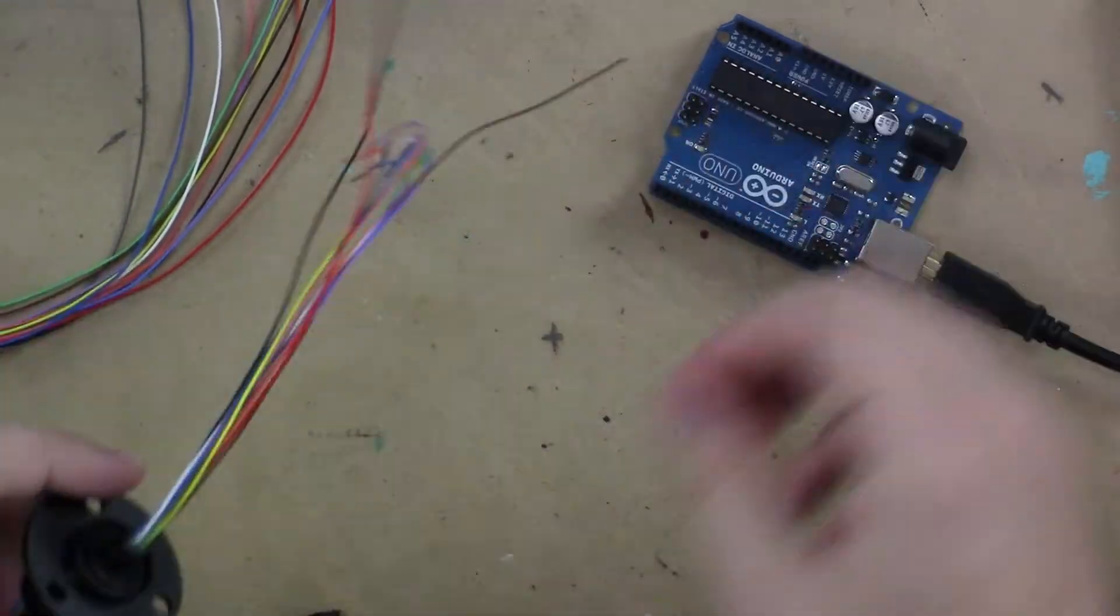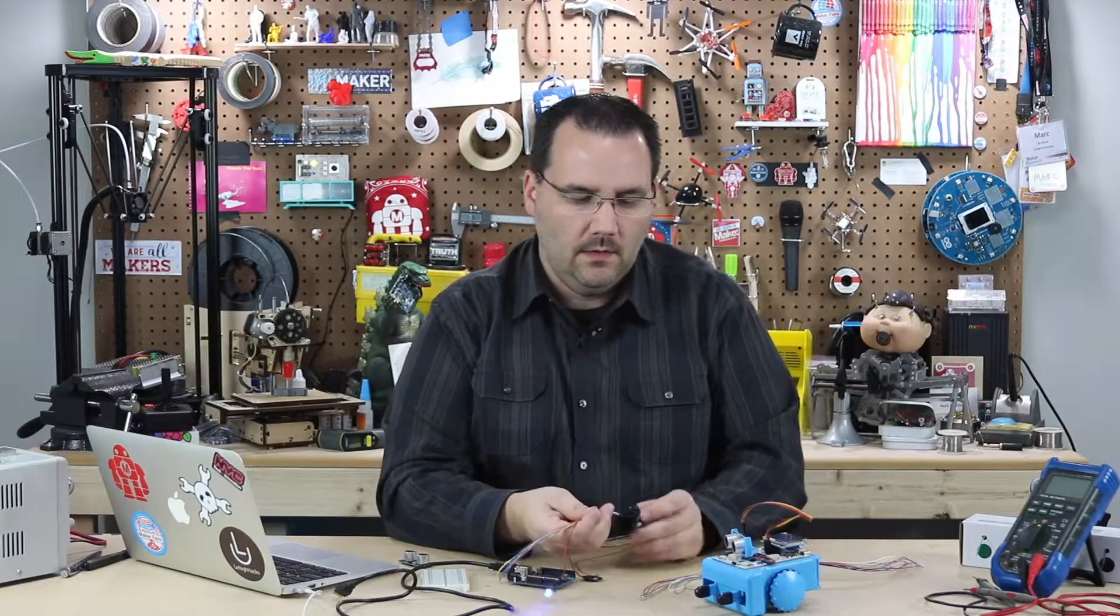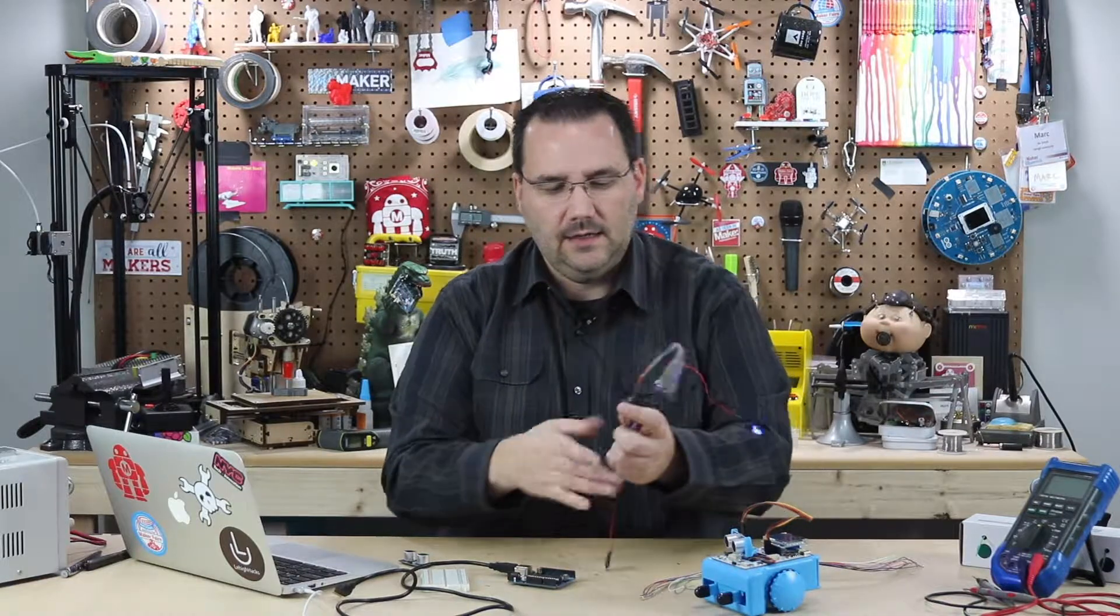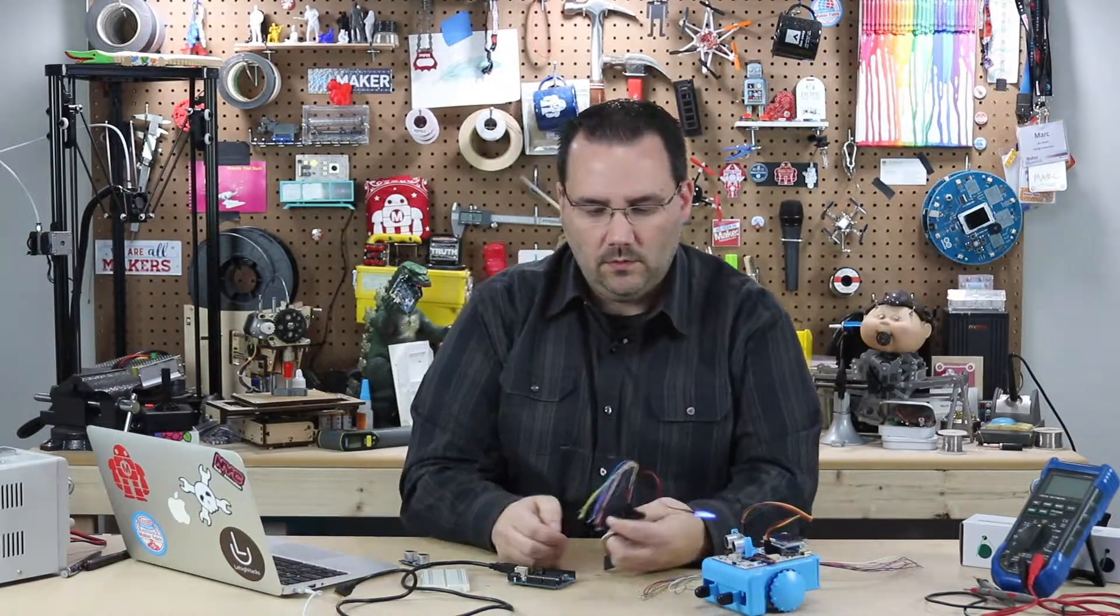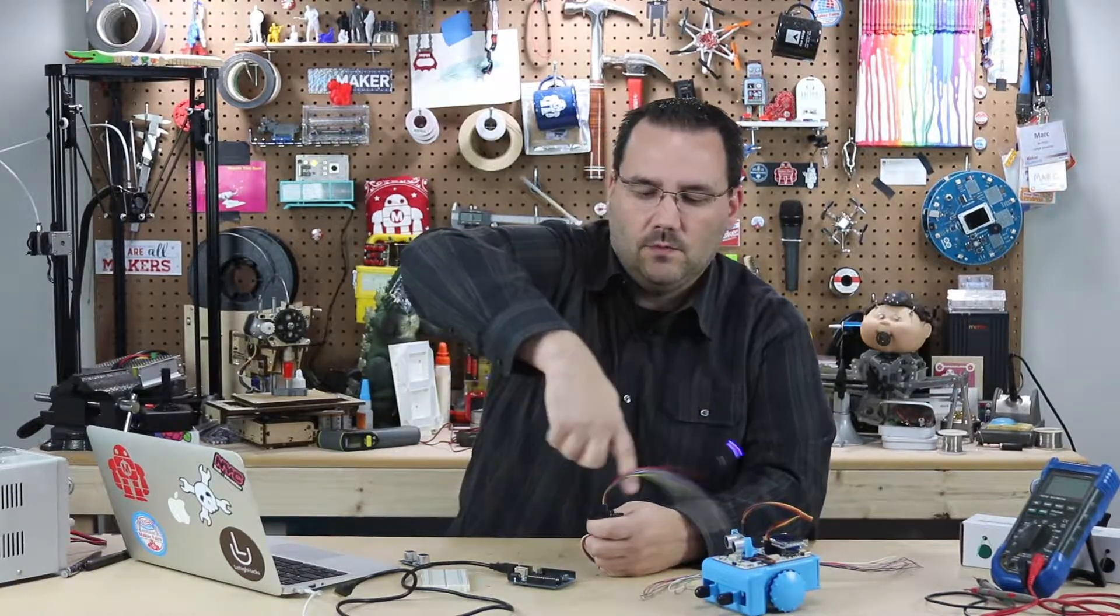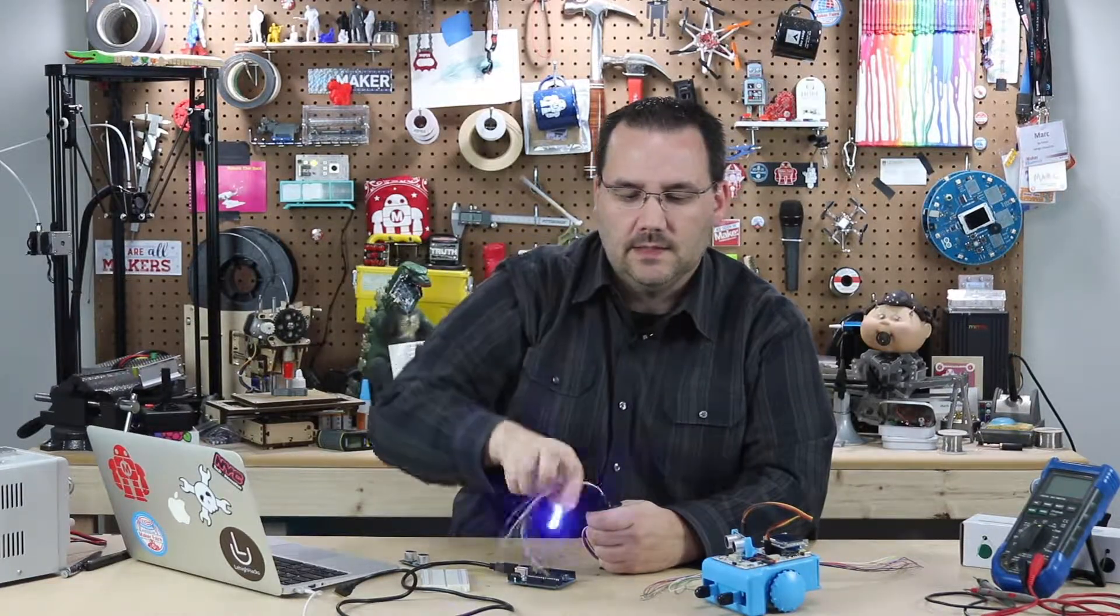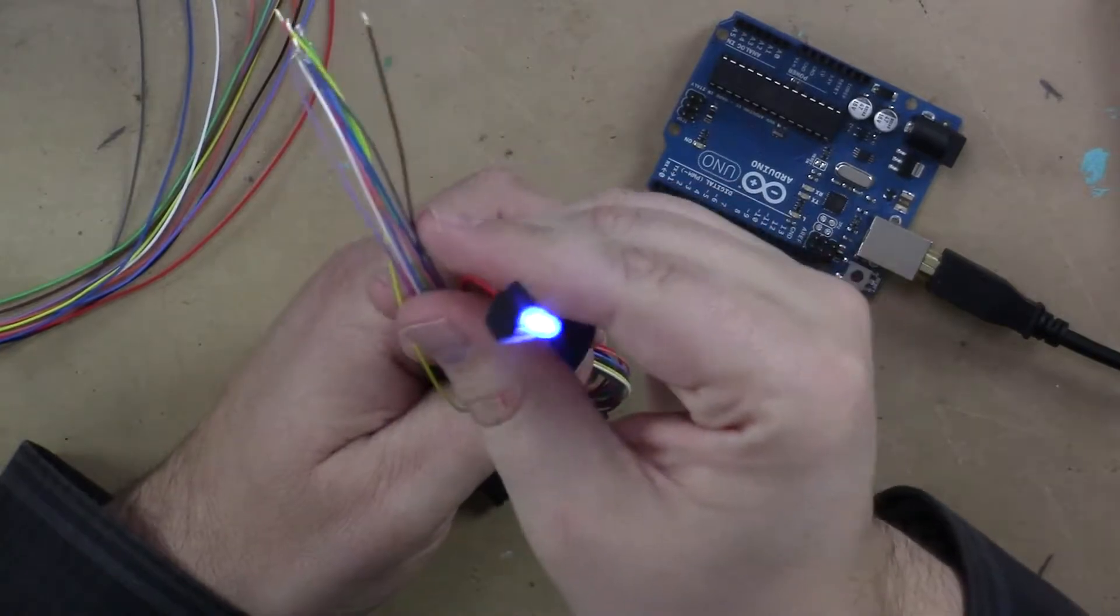So the power is being transmitted from the coin cell battery through the slip ring here to the LED. Now this is what's kind of neat. If I were to hold the base, I can twirl this around essentially forever. And you can see there's no loss in electricity going through here.